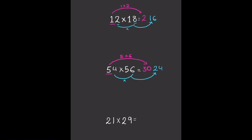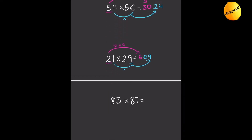Now let's do 21 times 29. We do the same thing — we multiply the tens place, which is 2, by its next highest number, which is 3. So 2 times 3 is 6. Then we do the units place: 1 times 9 is 9. But before we write just 9, we have to represent it as a two-digit number, so we write it as 09. If you just write 9, the answer would be 69, and 21 times 29 is definitely not 69.